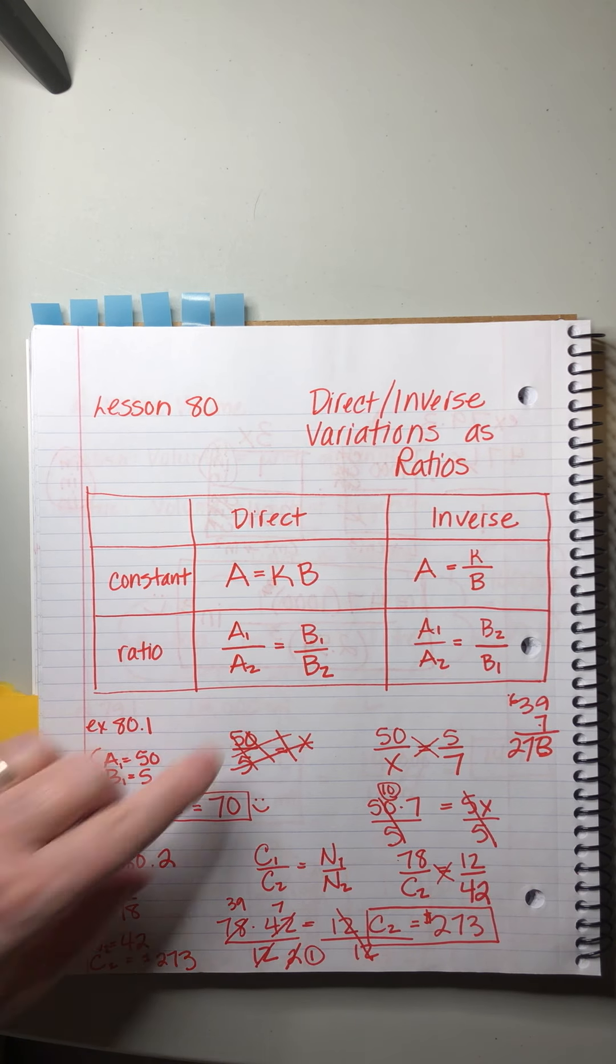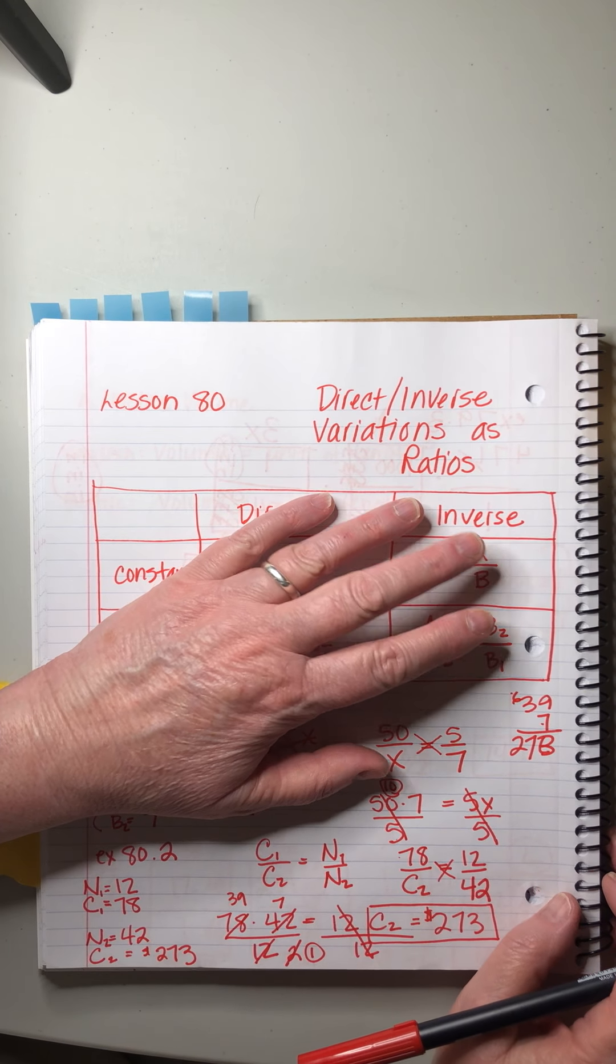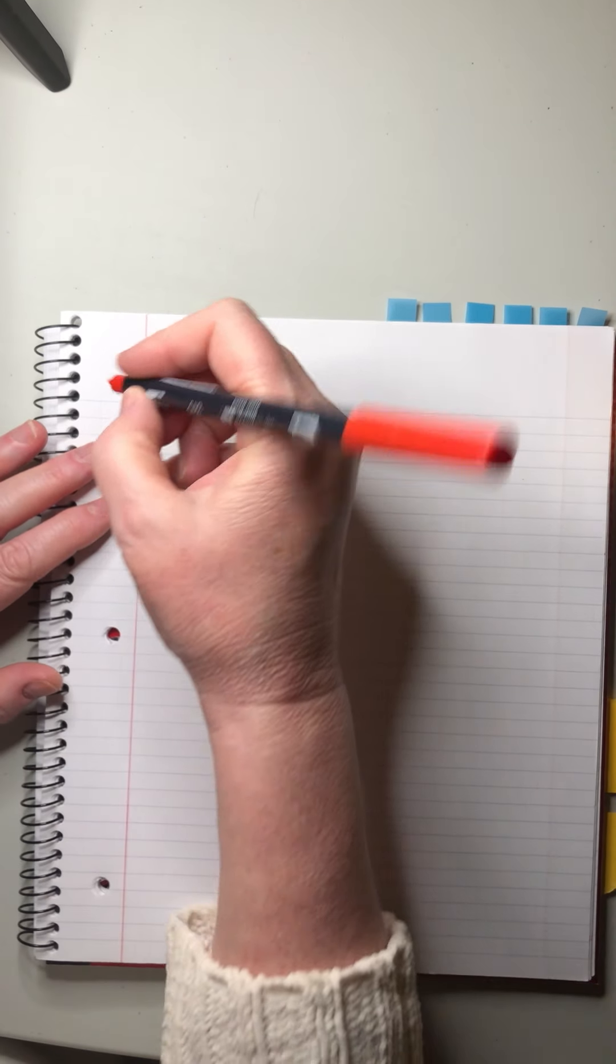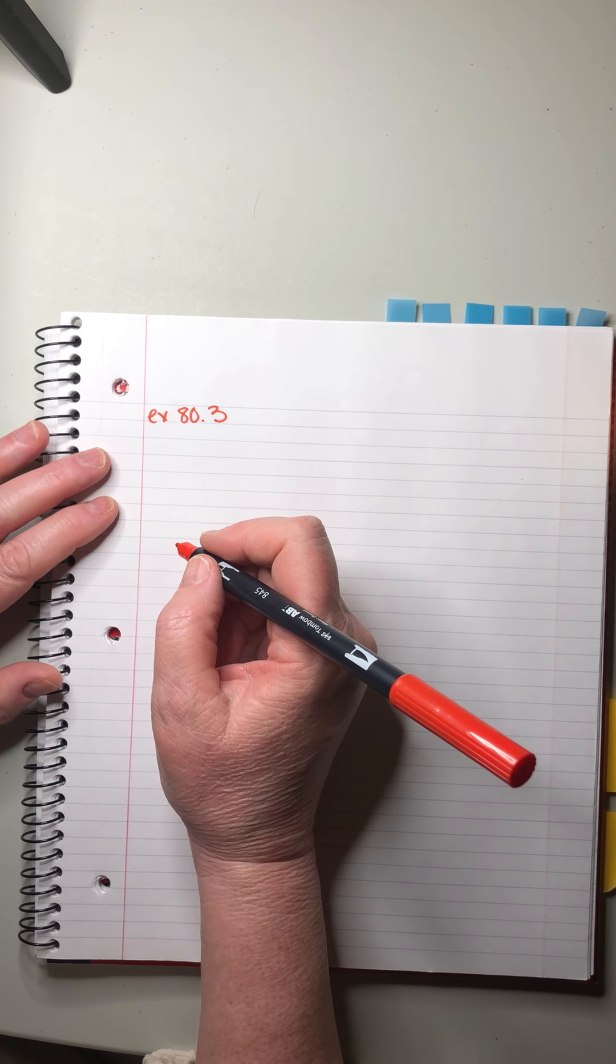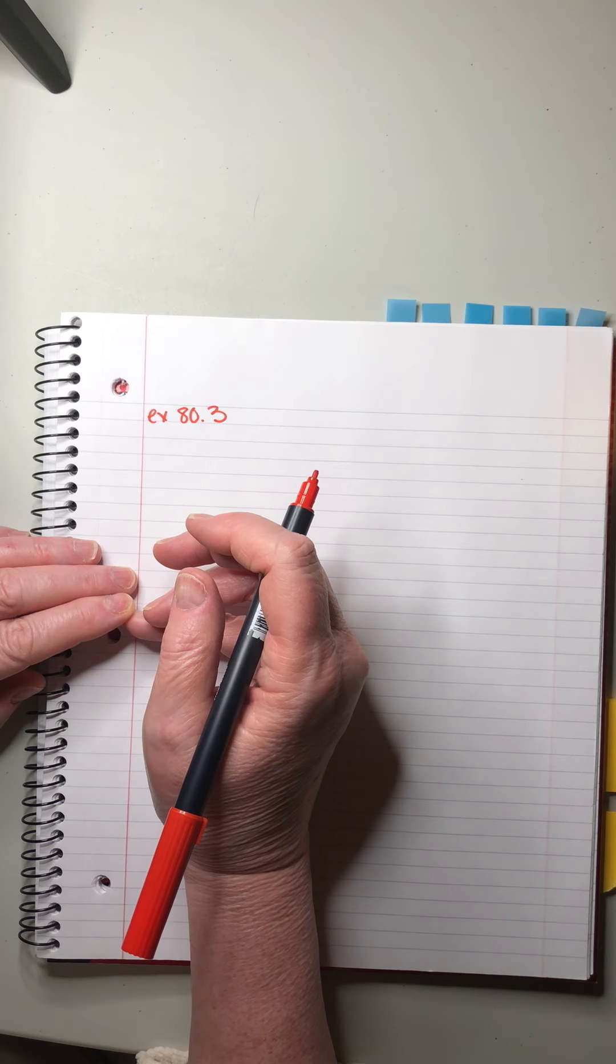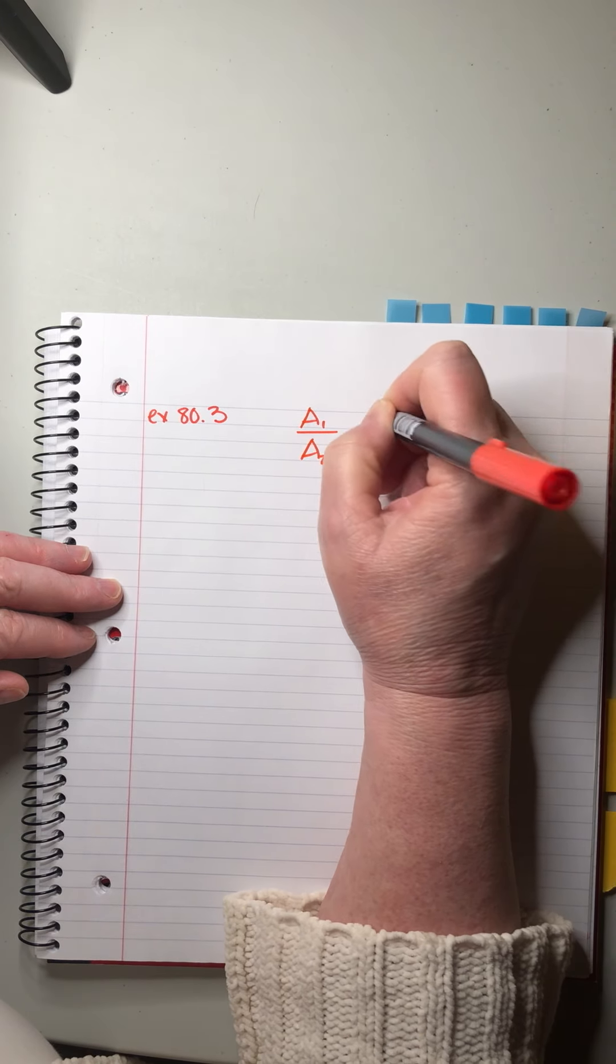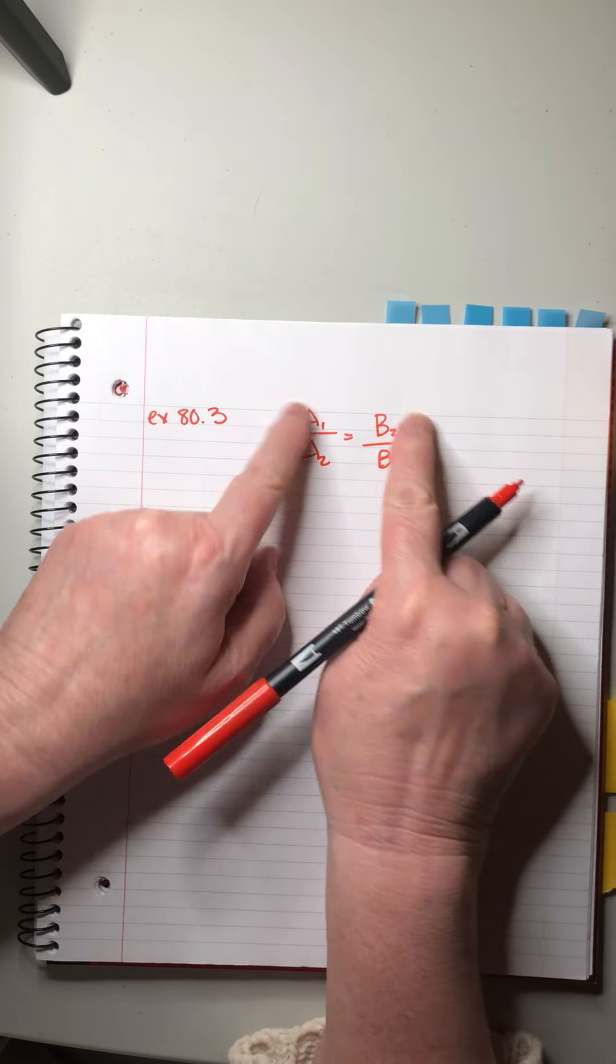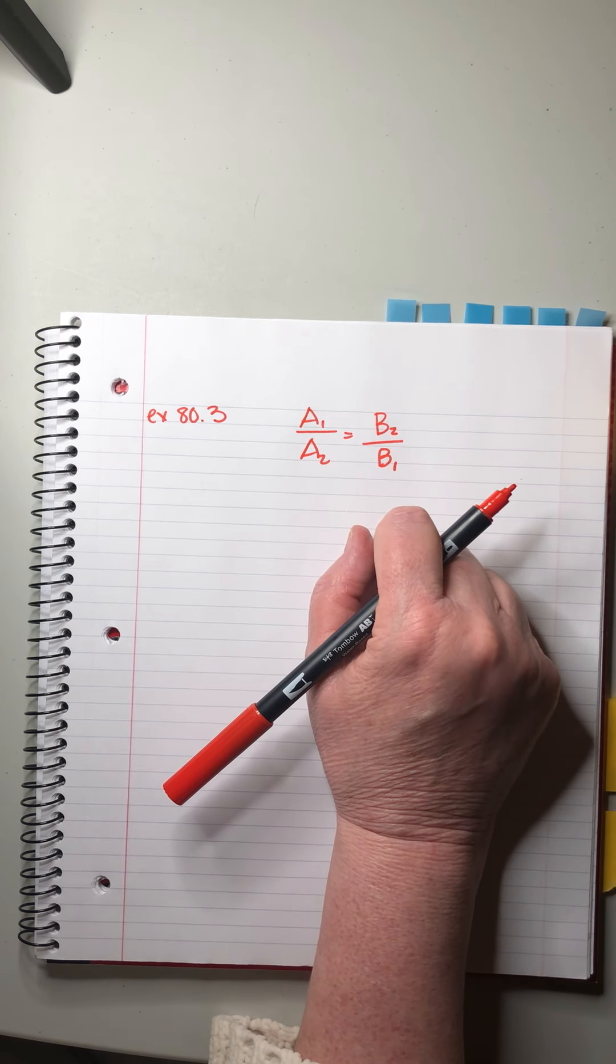This is very simple and straightforward. Easy to remember. Now we're going to try a couple problems with the inverse ratio method. And then we shall be done. Ready? 80.3. And remember our basic form here is A1 over A2 equals B2 over B1. Inverse in the name of the problem. Inverse in the formula of the problem. It makes perfect sense, right?